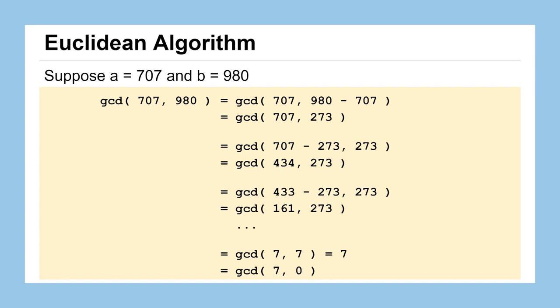It turns out you can check that it is true: 7 is the greatest common divisor of 707 and 980. But let's find out why.